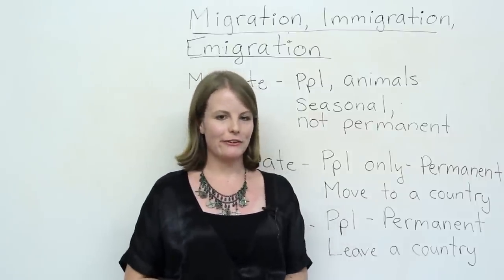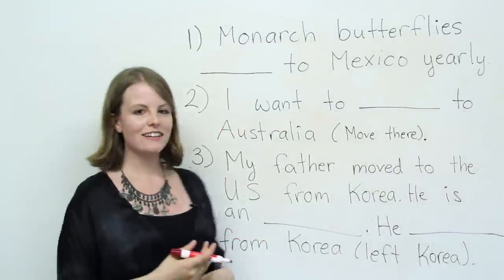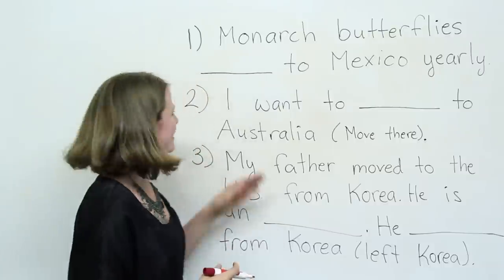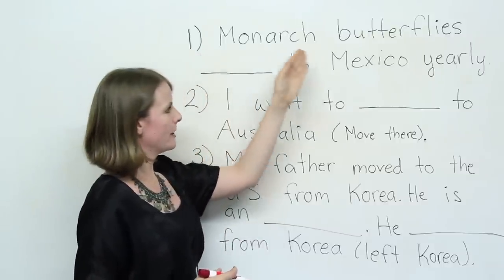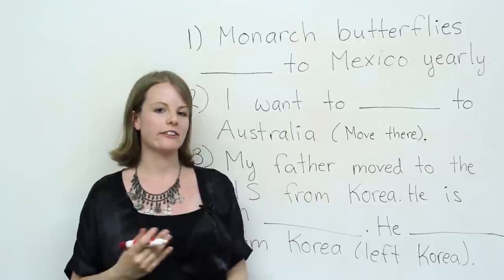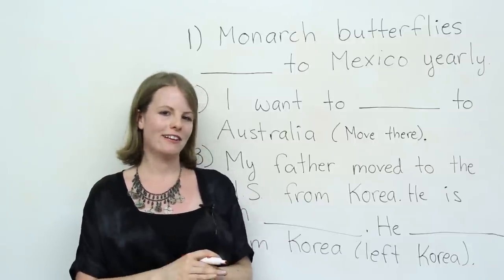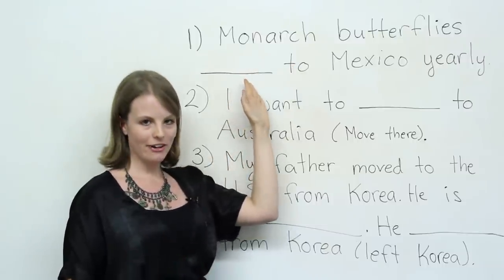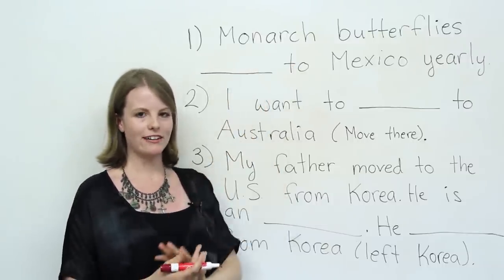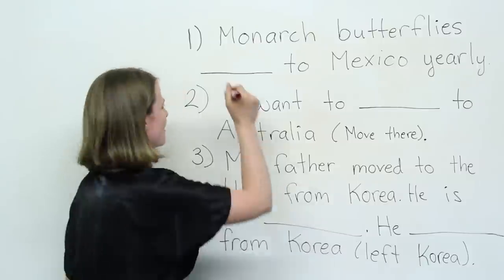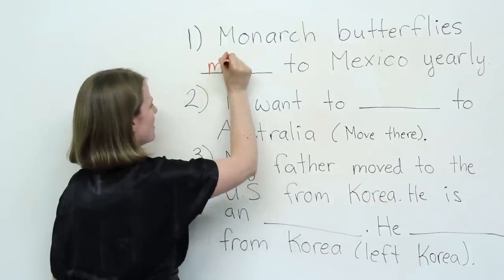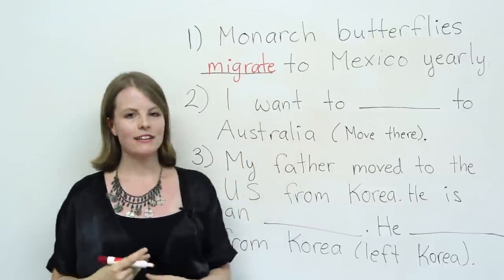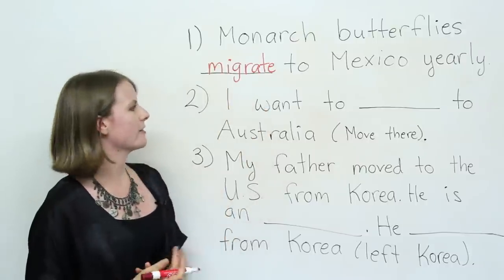Let's do some practice questions together. Number one: monarch butterflies ___ to Mexico yearly. Do you think it's migrate, immigrate, or emigrate? Monarch butterflies migrate — so the answer is migrate. Monarch butterflies migrate to Mexico yearly.